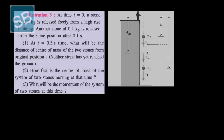At time t equals 0, a stone of 0.1 kg is released freely from a high-rise building, and another stone of 0.2 kg is released from the same position after 0.1 second. In the figure, the 0.1 kg stone is freely falling, and after 0.1 second, the second ball is also freely falling. At time t equals 0.3 second, we have to find the distance of the center of mass of the two stones from the original position.